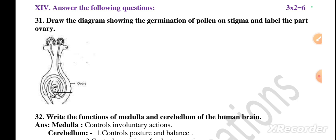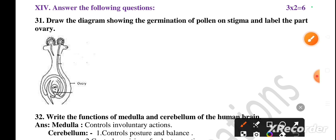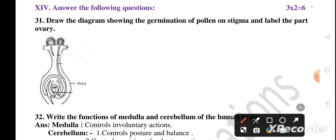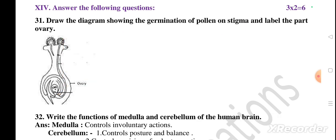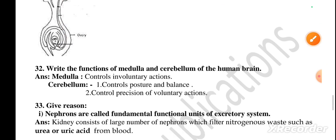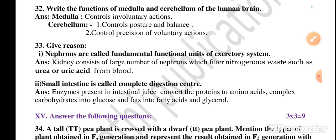Question main number 14 — answer the following questions, two marks each, total three questions. Question 31: draw the diagram showing germination of pollen on stigma and label the parts. A small tube-like structure arises when the pollen is fertilized — that shows the germination of pollen on stigma. This is a very important diagram; it has been asked two to three times in previous annual exams.